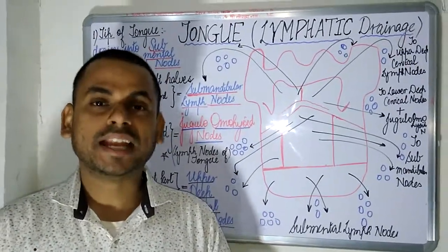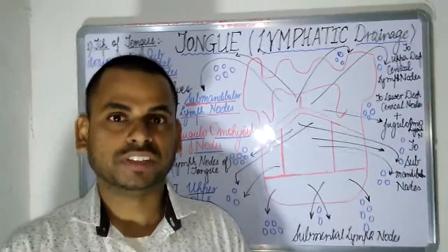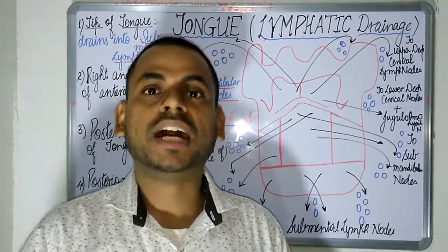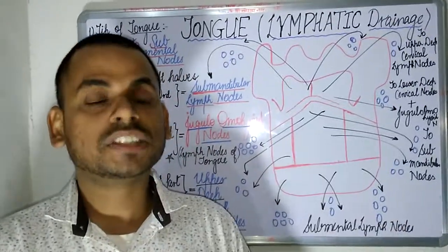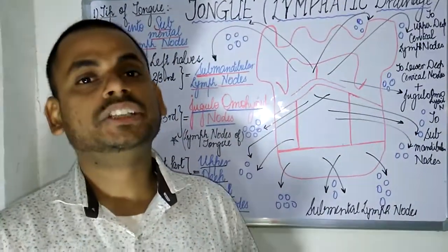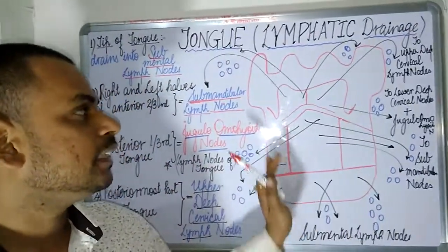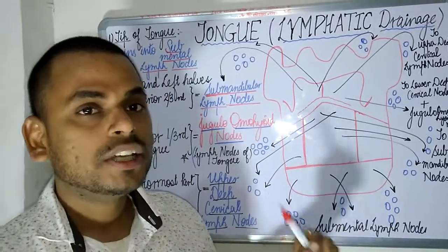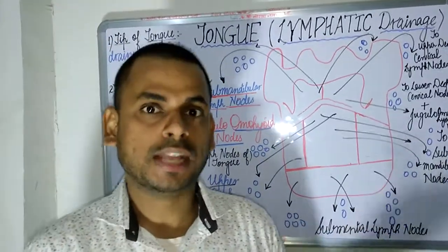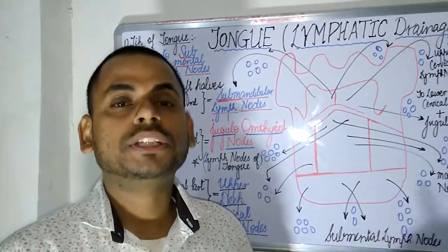Welcome to the next session of the anatomy series. Today's topic is the lymphatic drainage of the tongue. In upcoming videos I'll be covering the development, arterial supply, muscles, and nerve supply of the tongue. But today's topic is lymphatic drainage, and I have made it very simple by dividing the tongue using a schematic diagram.